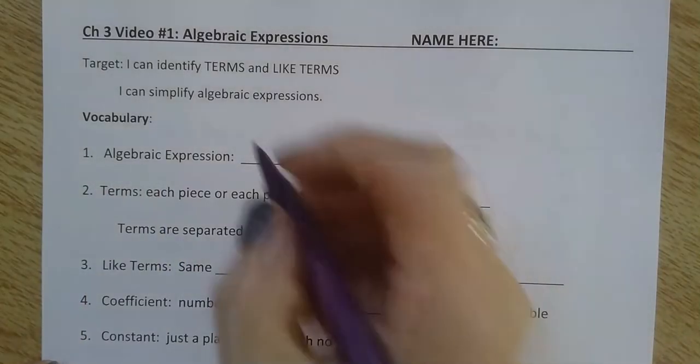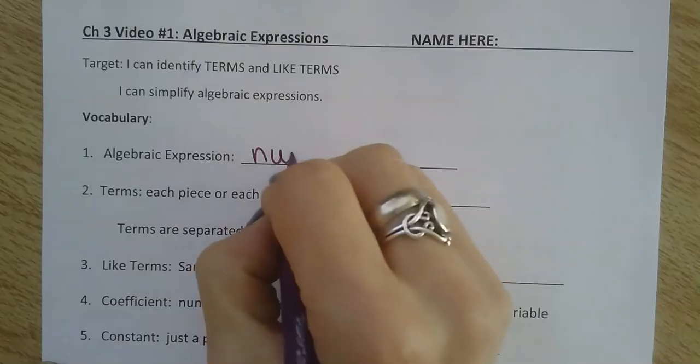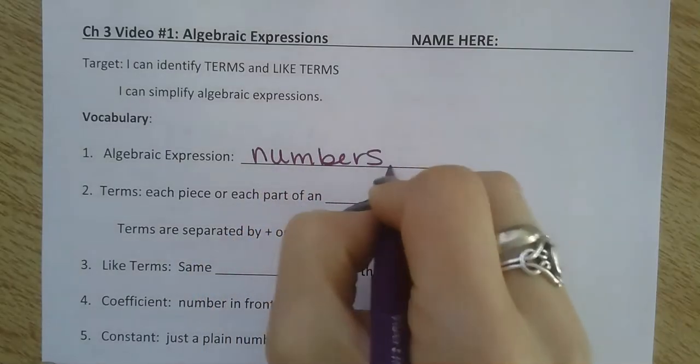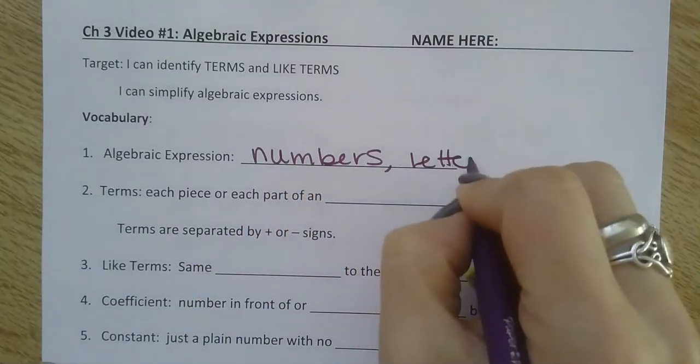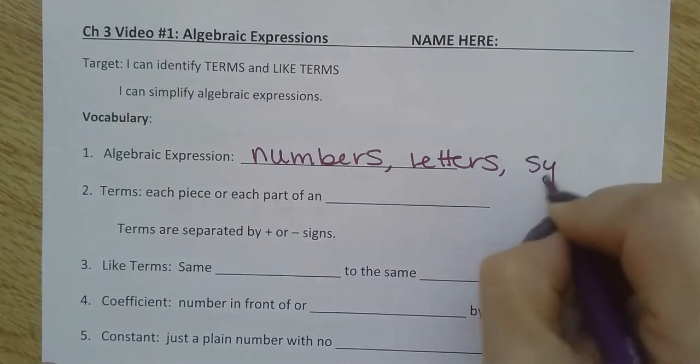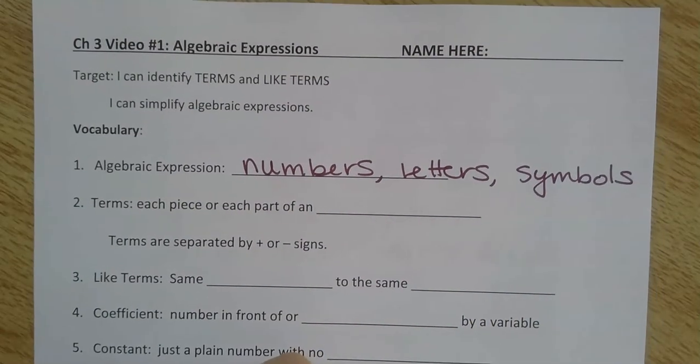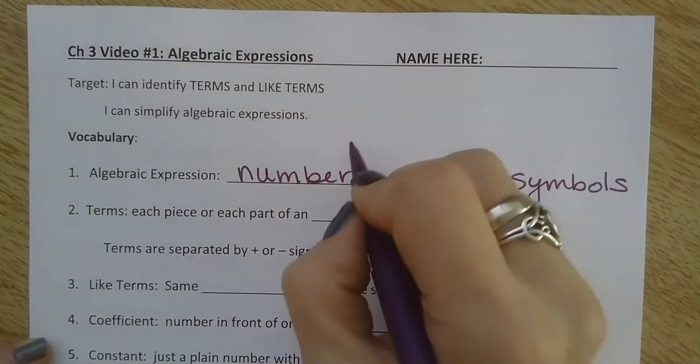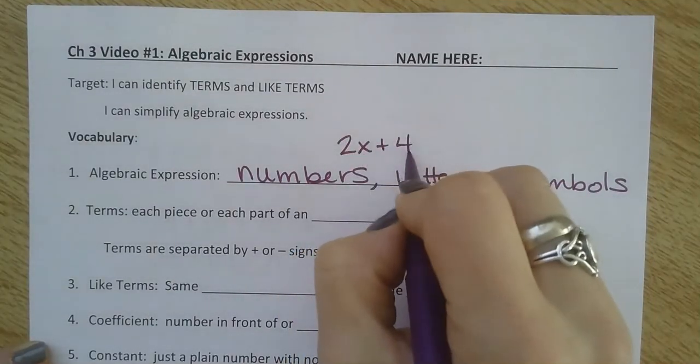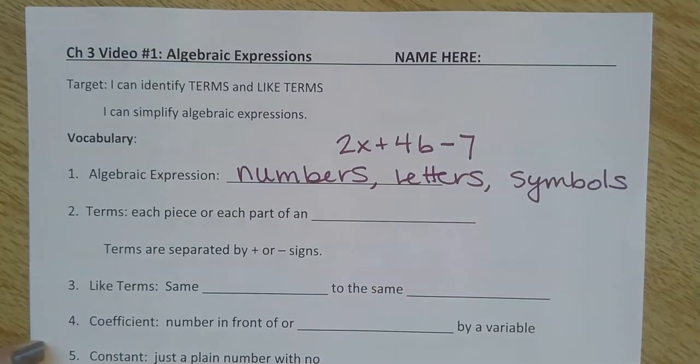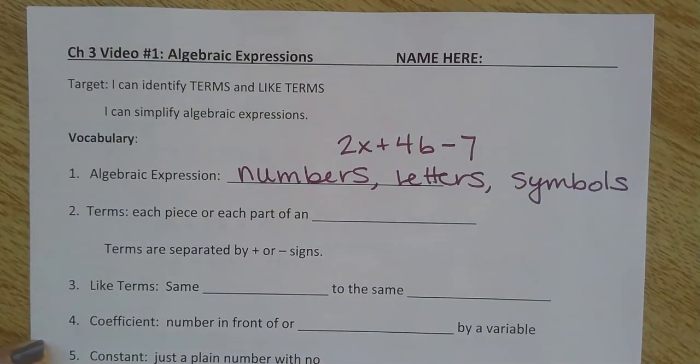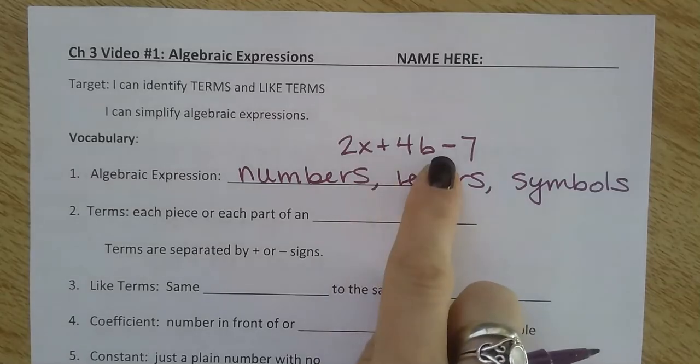Algebraic expressions. That is just numbers, letters, symbols, putting those all together into an expression. So something like 2x plus 4b minus 7 would be an algebraic expression - numbers, letters, and symbols, including the different operations.